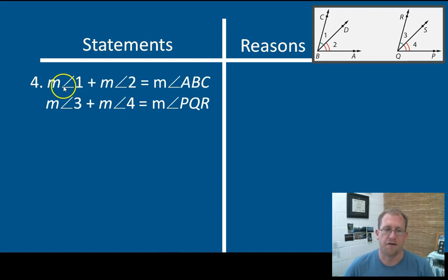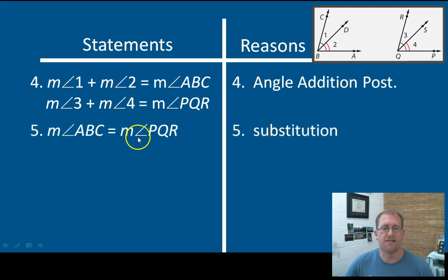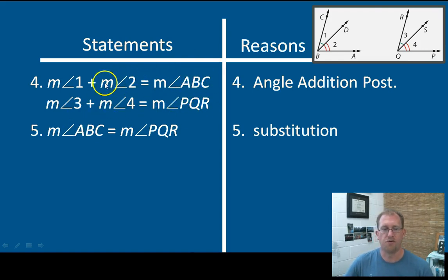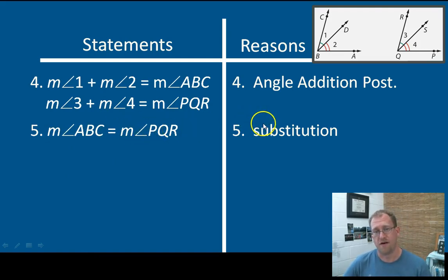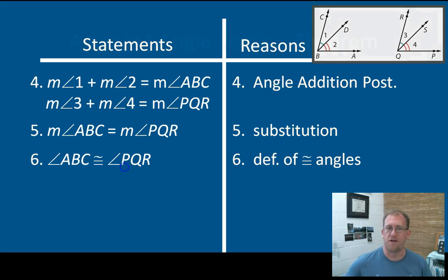I can tell you that the measure of 1 plus the measure of 2 is the measure of ABC, and the measure of 3 plus 4 is PQR. That's the angle addition postulate. Now I can substitute in: I have that these are equal statements, and that each sum equals the larger angle. So I can go through and substitute — or transitive, both would be the right reason — and say that the measure of angle ABC is the same as the measure of angle PQR. That's substitution or transitive; either of those are fine. Therefore, angle ABC is congruent to PQR, which is just the definition of congruency. Pretty simple proof.